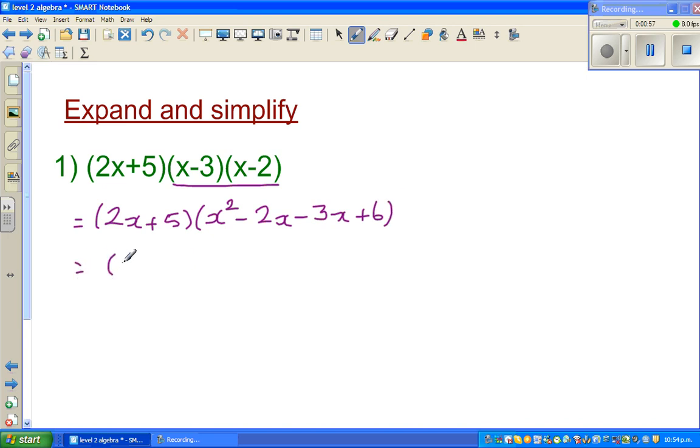So this is 2x plus 5 times x squared. Now I have to simplify this. Minus 2x minus 3x gives you minus 5x. So it's x squared minus 5x plus 6.